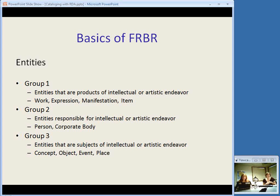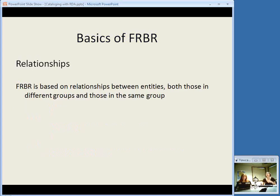The entities in FRBR are divided into three groups: products of intellectual endeavors, entities responsible for these products, and entities that are the subjects of these products. The terminology includes work, expression, manifestation, and item; person; corporate body; concept; object; event; and place. You're going to see those again when we get to how RDA is arranged. And then the other part of the conceptual model is that there are relationships between these entities — entities in different groups have relationships to each other, and those within the same group have relationships to each other.